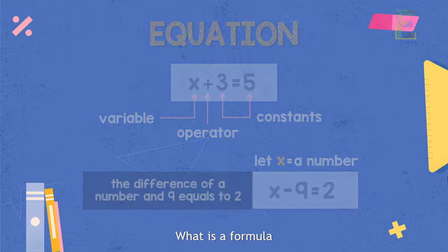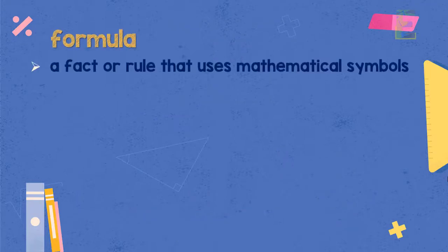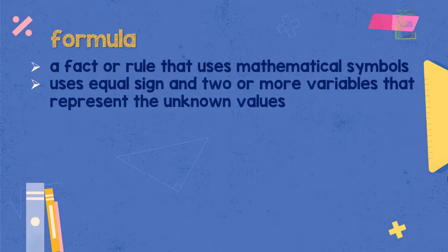So what is a formula? Formula is a fact or rule that uses mathematical symbols. It also uses equal signs and two or more variables that stand for the values we don't know yet.